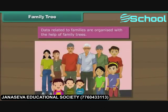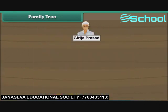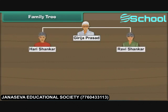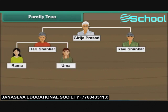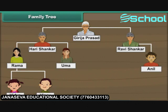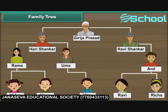Family tree. Data related to families are organized with the help of family trees. Ravi lives in a joint family. Let us represent his family with the help of a family tree. The eldest member in the family is Ravi's great-grandfather, Girija Prasad. He has two sons, Hari Shankar and Ravi Shankar. Hari Shankar has two daughters, Rama and Uma. Ravi Shankar has one son, Anil. Rama has a daughter Vidya and a son Vinay, while Uma has a son Vijay. Anil has a son Ravi and a daughter Richa. The family tree of Ravi's joint family is now complete.